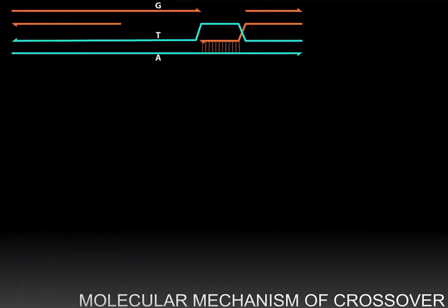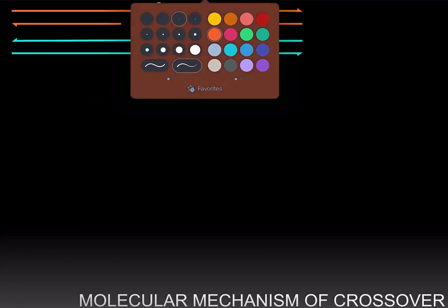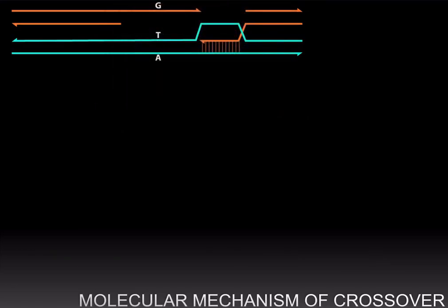In the next step, DNA polymerase is going to extend both the orange and the cyan strands. So we will have polymerization, new DNA forming, where the orange strand is using the cyan strand as a template.